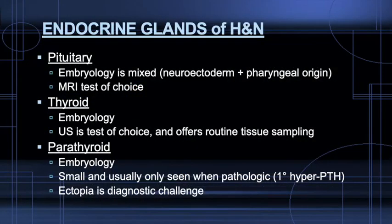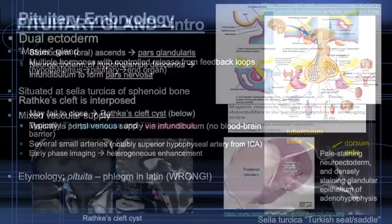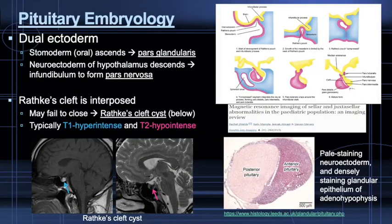Moving on to endocrine glands, we'll review the pituitary, thyroid, and parathyroid glands. The pituitary gland is often called the master gland, as its hormones affect a multitude of end organs. The gland resides in the sella turcica, a central depression of the sphenoid body. The majority of pituitary hormones are produced in the adenohypophysis, or anterior pituitary, the derivative of oral ectoderm that ascends to the skull base, whereas the neurohypophysis, or posterior pituitary, forms and descends from the primitive diencephalon. These two ectodermal derivatives intertwine to form the pituitary gland.